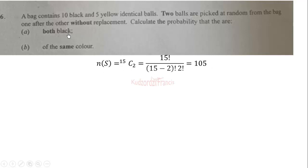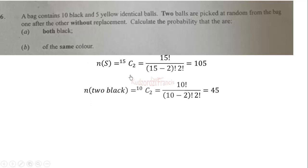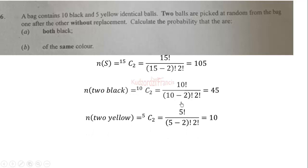The number of ways we can choose two balls from 10 black balls is given by 10C2, which is 10! over (10−2)! times 2!, and that equals 45. Also, choosing two balls from a total of five yellow balls gives us 5C2, which equals 10 ways.